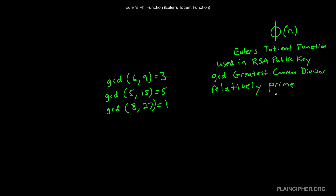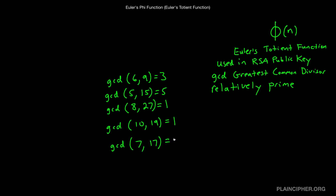Now let's talk about what it means to be relatively prime. Relatively prime means that the GCD of your two numbers is one. So the GCD of eight and 27 is one, meaning eight and 27 are relatively prime to each other. The GCD of 10 and 19 is one, so 10 and 19 are relatively prime. The GCD of 7 and 17 is one, so 7 and 17 are relatively prime to each other.